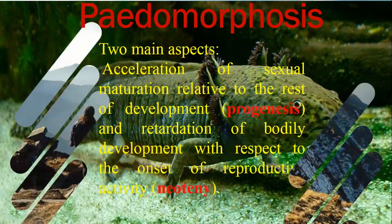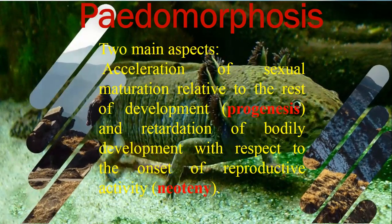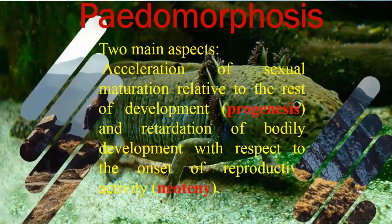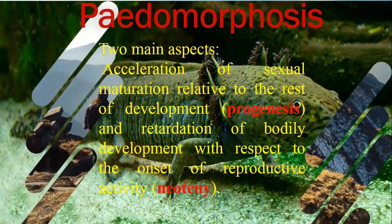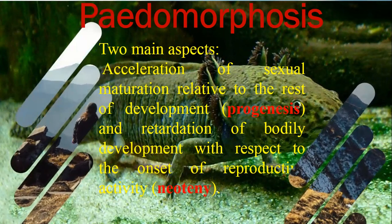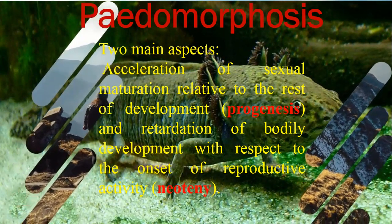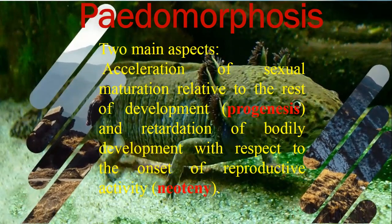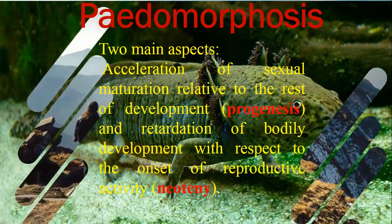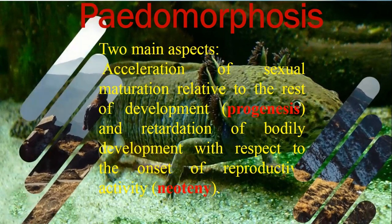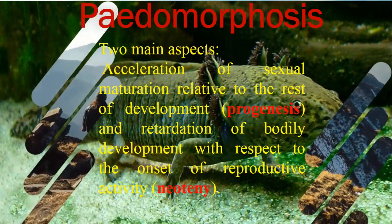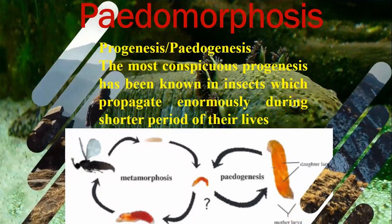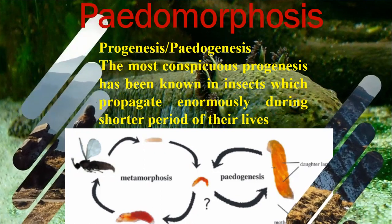In humans we discuss pedomorphosis in two main aspects. The first is acceleration of sexual maturation relative to the rest of body development, which we call progenesis or pedogenesis — where sexual maturation occurs while the rest of the body development lags behind. The second is retardation of bodily development with respect to the onset of reproductive activity, where somatic structures other than reproductive structures develop more slowly.